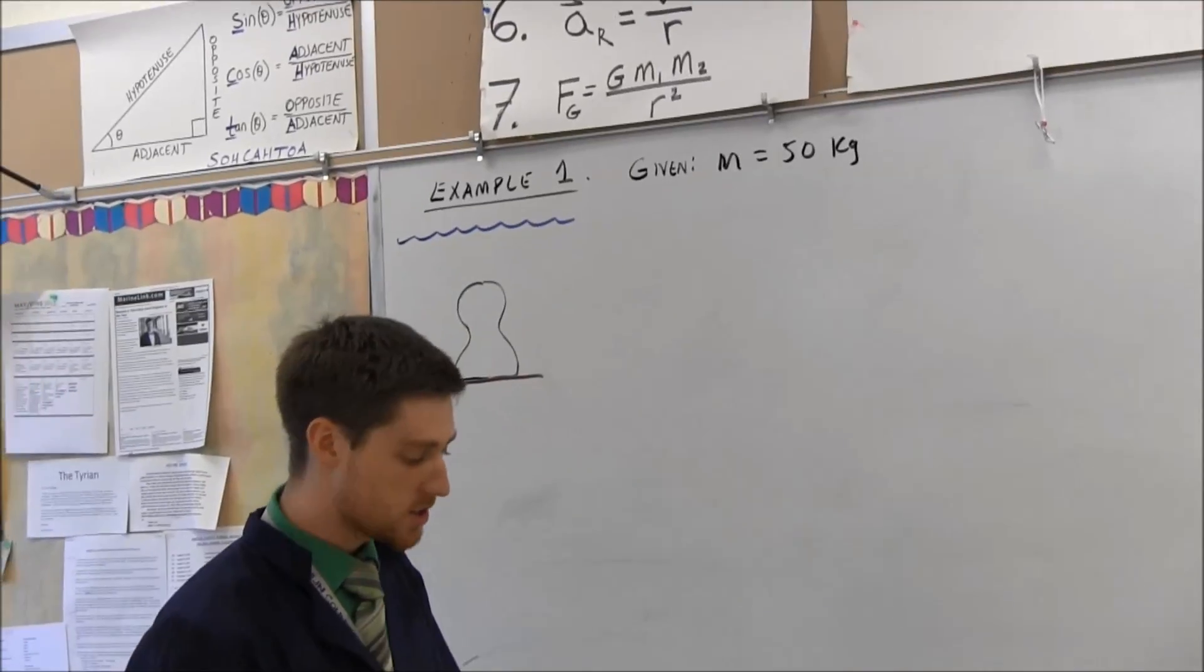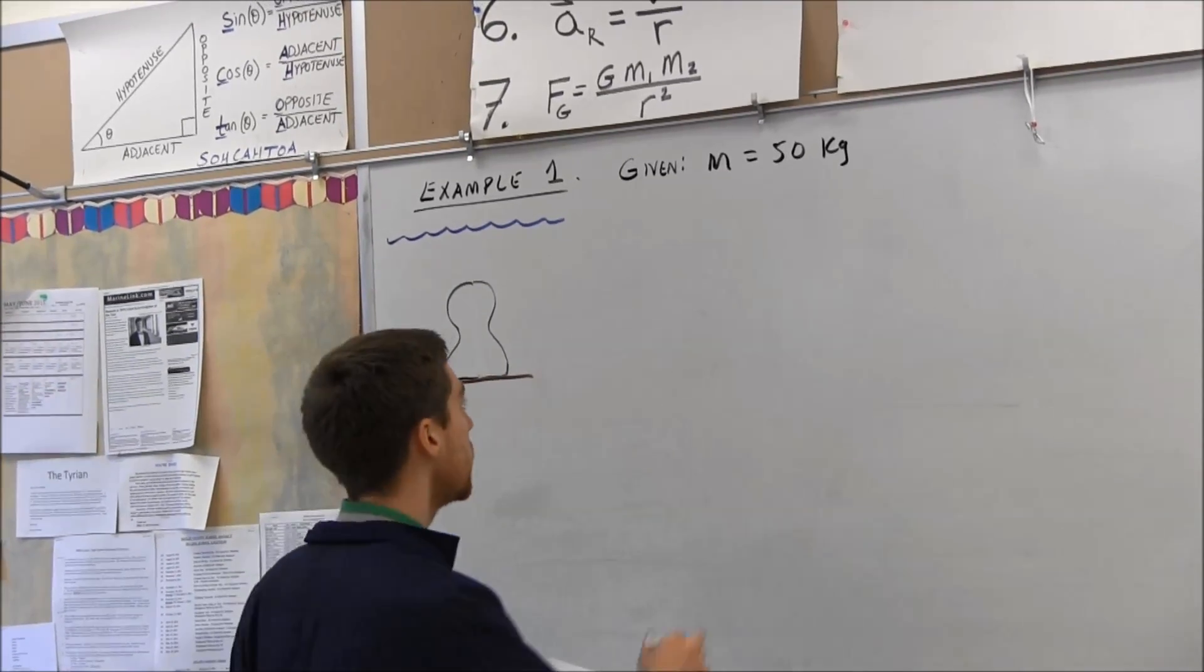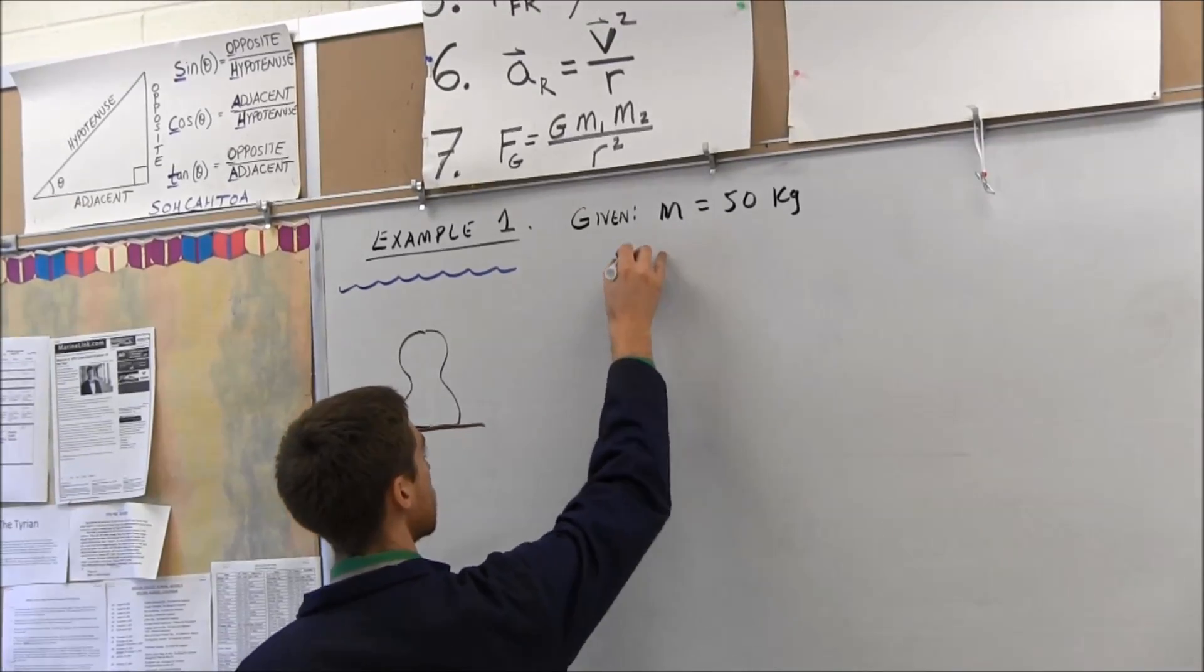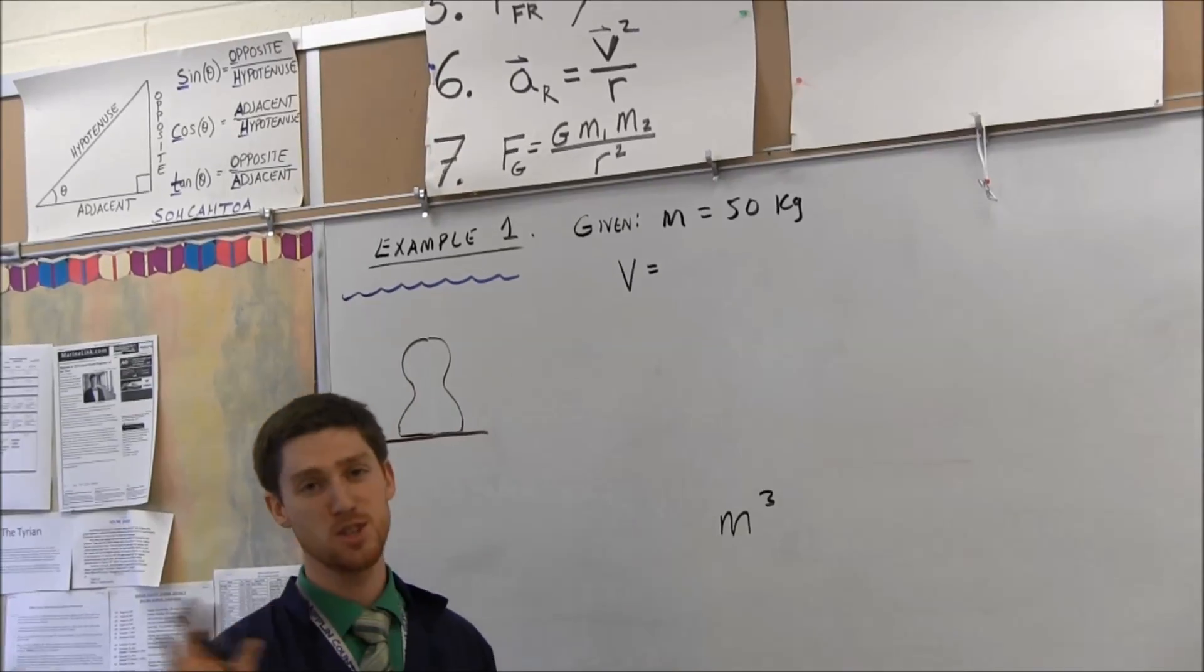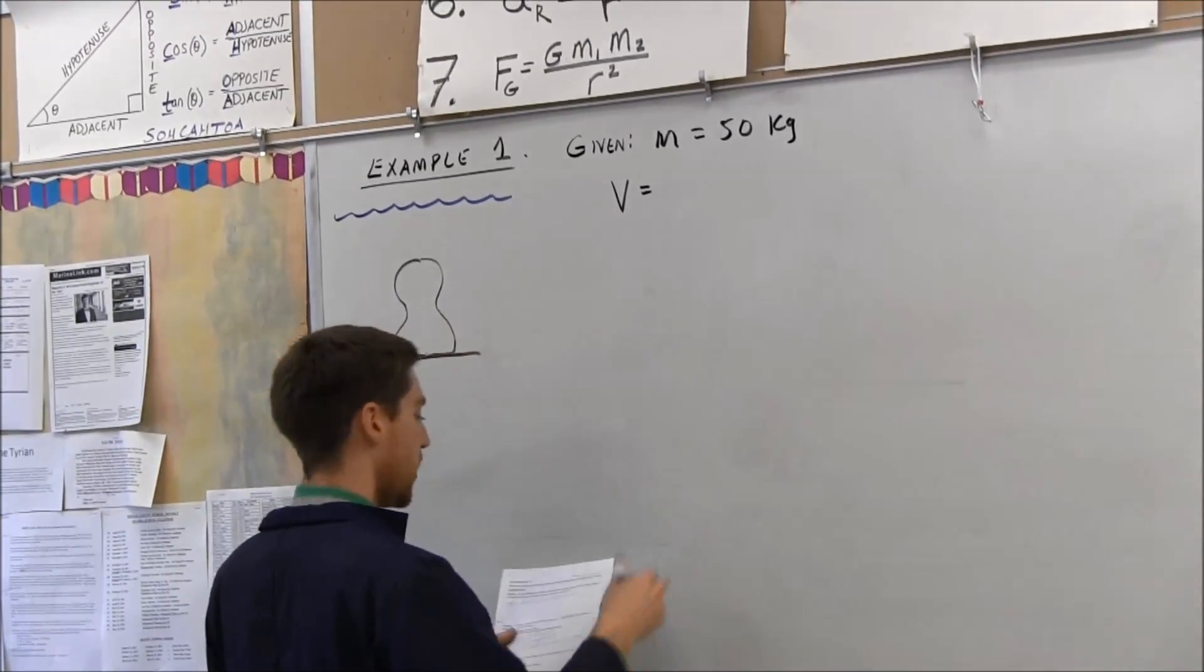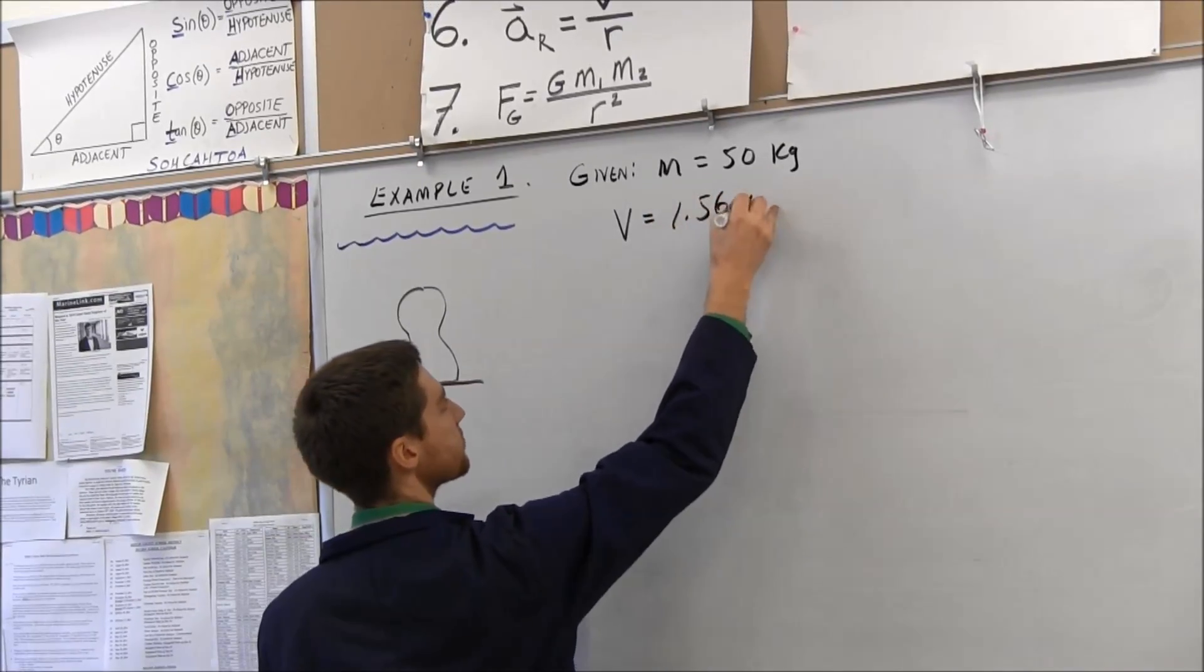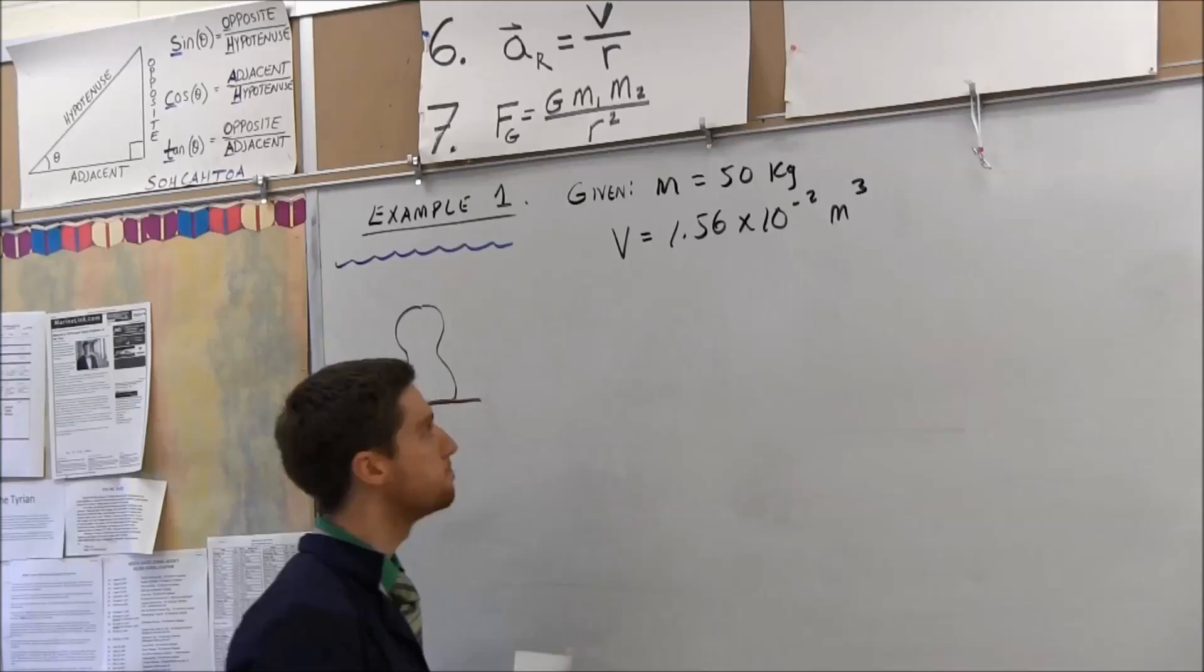Determine the buoyant force of a granite statue that is 50 kilograms of mass. I'm just going to go ahead and start writing what I'm given here, just keep the standard approach. 50 kilograms, and then it says it takes up 1.56 times 10 to the negative 2 cubic meters. That sure sounds like a volume to me.